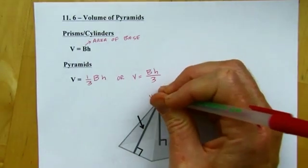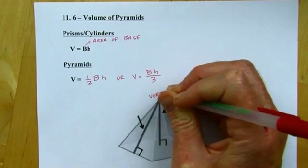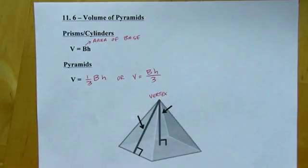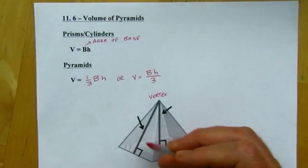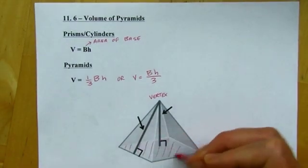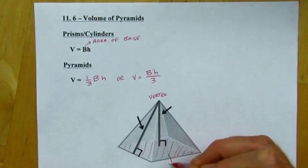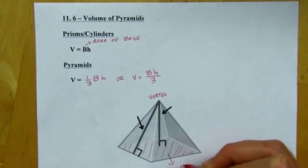So, the point that it comes to is called the vertex. The base is going to be the opposite end. So, this is a rectangular pyramid.